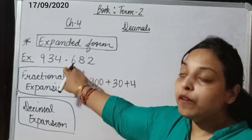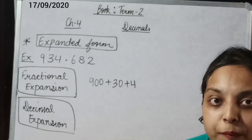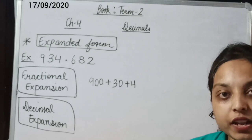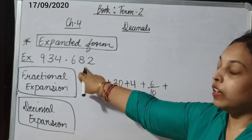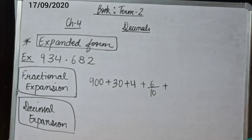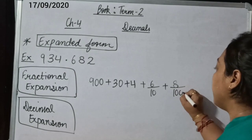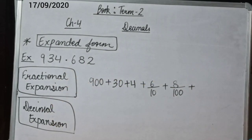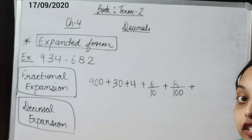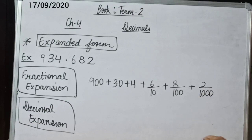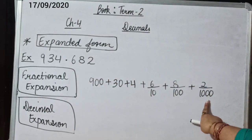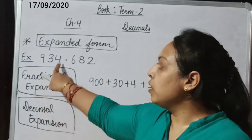So how can we write the place value of 6 if it is at the 10ths place? The 10ths place means you divide 6 by 10, so the fraction is 6/10. Then we have 8 at the 100ths place, so the fraction is 8/100. And last, we have 2 at the 1000ths place, so the fraction is 2/1000. When presenting the decimal part as fractions in expanded form, this is known as the fractional expansion of the number.